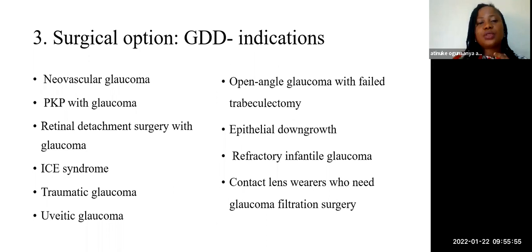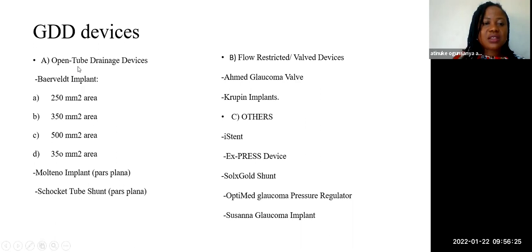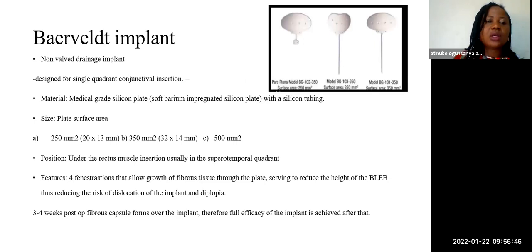Surgical option three is glaucoma drainage devices (GDD). They are indicated in neovascular glaucoma and other conditions. When primary open-angle glaucoma has failed trabeculectomy, a glaucoma drainage device is the next option to consider. Examples of open-tube drainage devices include the Molteno implant and Baerveldt implant. Flow-restricted or valved devices include the Ahmed valve and Krupin implant. Other devices include the OptiMed and Susanna glaucoma implant. In placing a valve, a peritomy is done superiorly, then blunt dissection is done to create a subtenon space. The recti muscles are identified, and the implant is placed superatemporally between the lateral and superior rectus muscles.